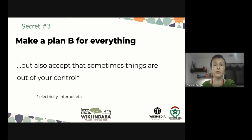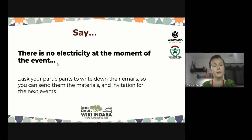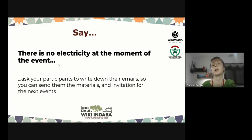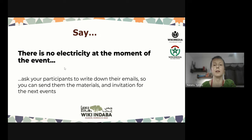Secret three: make a plan B for everything, but also accept that sometimes things are just out of your control, like electricity or internet. If there is no electricity at the moment of the event and your participants are already gathered, try to figure out what you can offer them. For example, ask participants to write down their emails so you can send them materials — how to write on Wikipedia or other things — and follow up with invitations for the next event. Try to have your laptop charged and have prepared slides or PDFs about Wikipedia, interesting facts, so you can engage your audience. Or maybe go to a cafe where you can turn it into an outreach session instead of a working session.